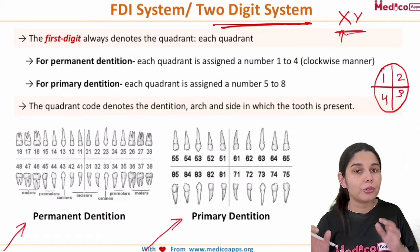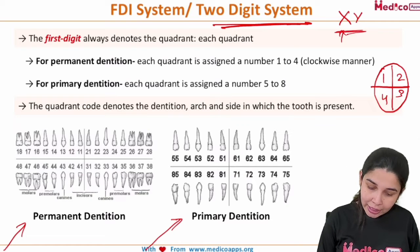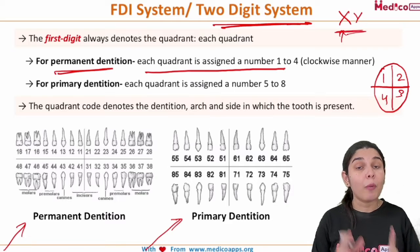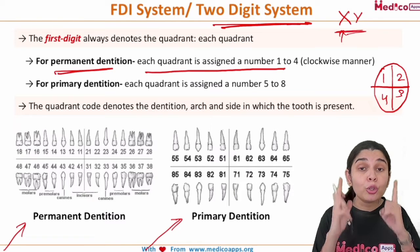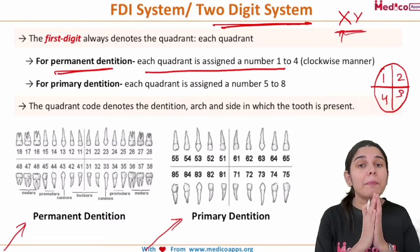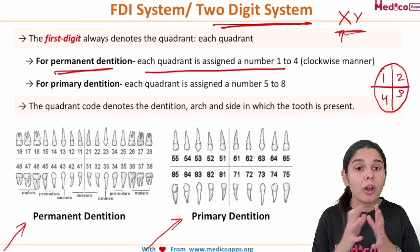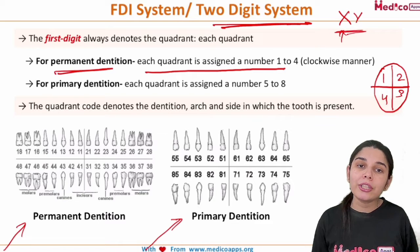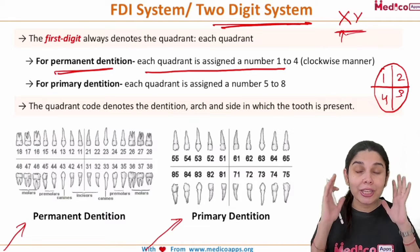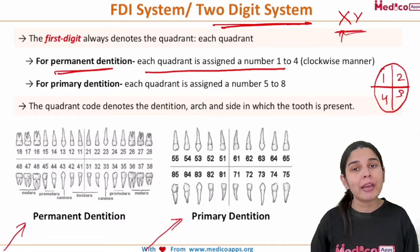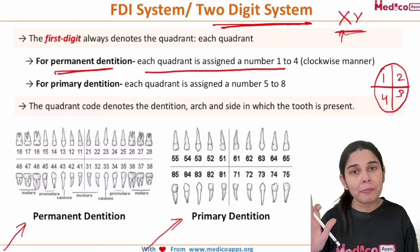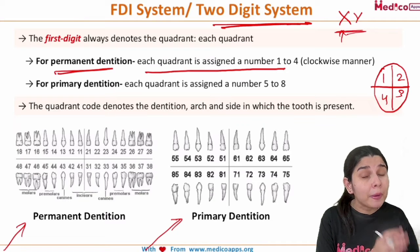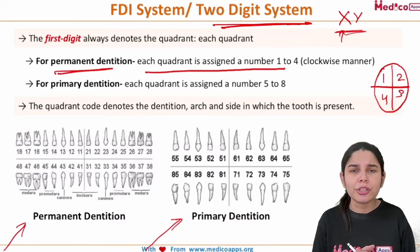For permanent dentition, each quadrant is assigned numbers 1 to 4 in a clockwise manner, starting from the right side. To easily remember it, start from your right side. This numbering applies to the permanent teeth.